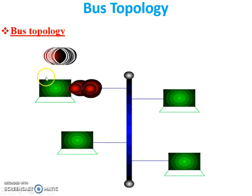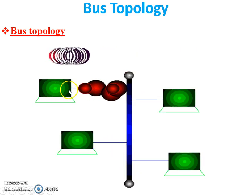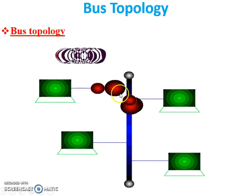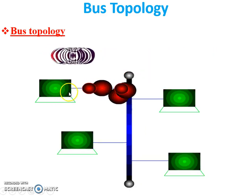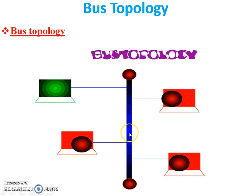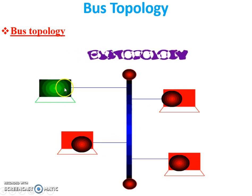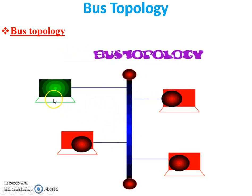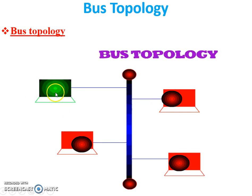Here is how CSMA works: Station 1 wants to communicate with Station 2. Station 1 first senses the bus or backbone cable to check if any data transmission is currently in progress. If a transmission is ongoing, Station 1 waits for it to complete. After completion, Station 1 senses the bus again, and if no transmission is in progress, it starts communicating with Station 2.